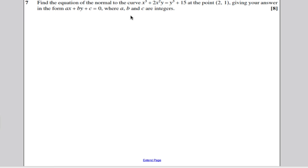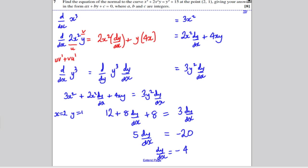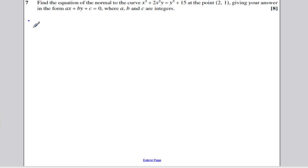So we know that the gradient at (2, 1) of the tangent is minus 4. So therefore, the gradient of tangent at (2, 1) is minus 4. So therefore, we can say the gradient of the normal is the negative reciprocal. So it's minus 1 over minus 4, which is a quarter.